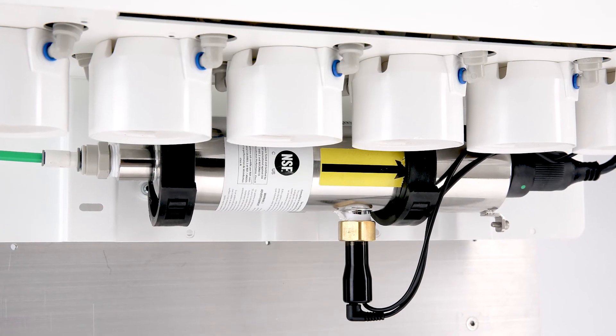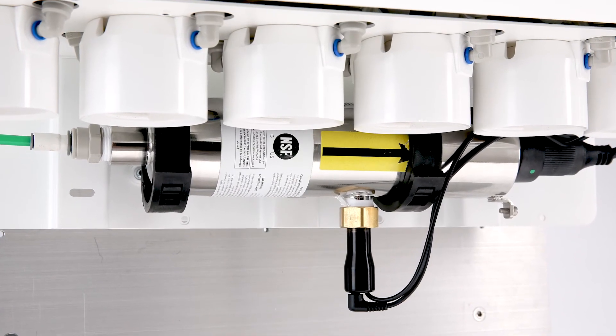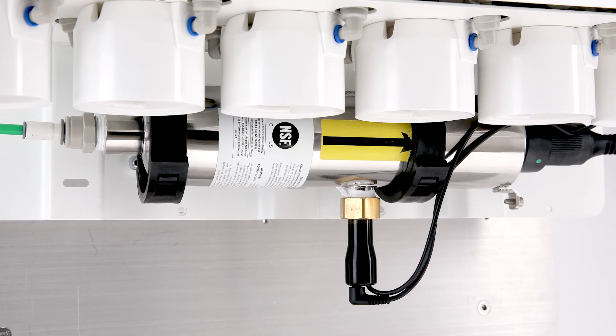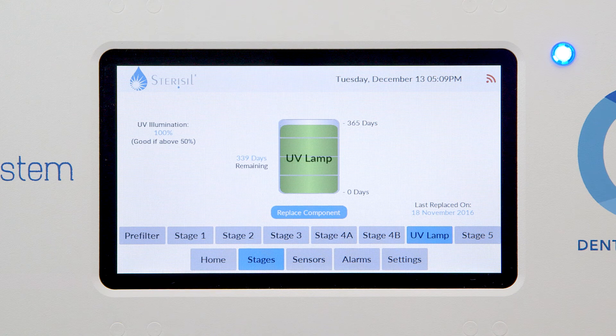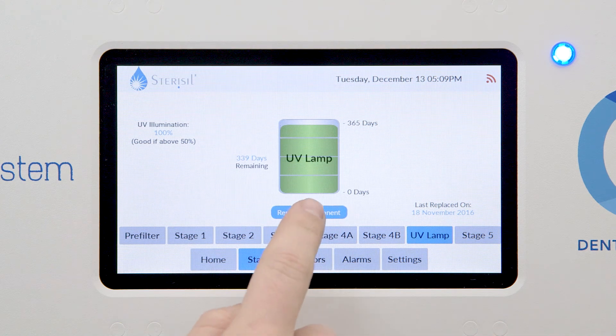The UV light's life is based on both light intensity and a 364-day count. To reset the light monitor, select the UV lamp tab on the bottom row and then touch Replace Component.